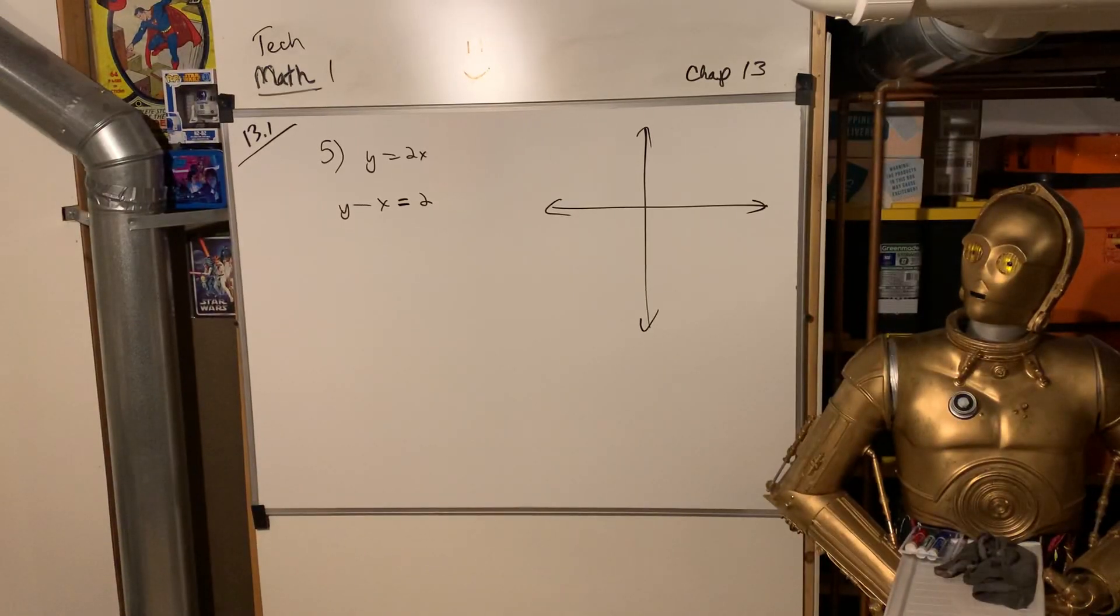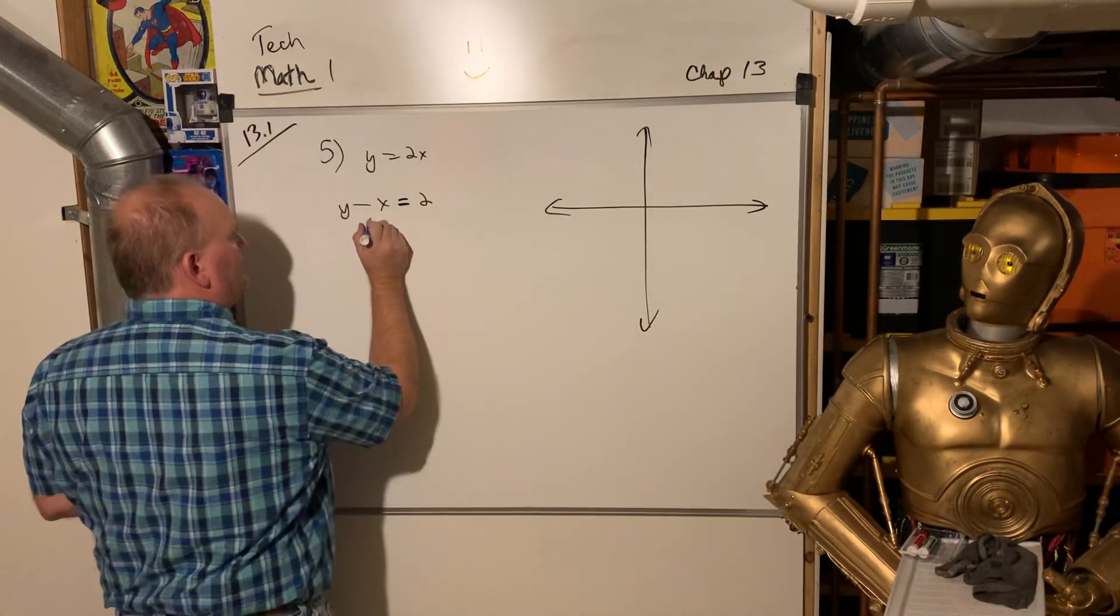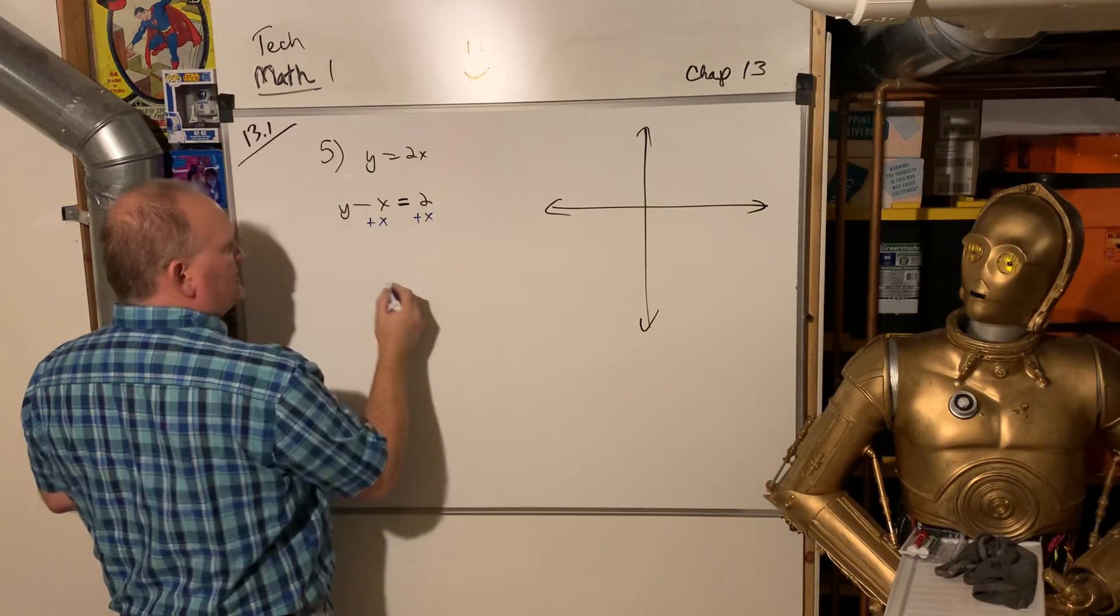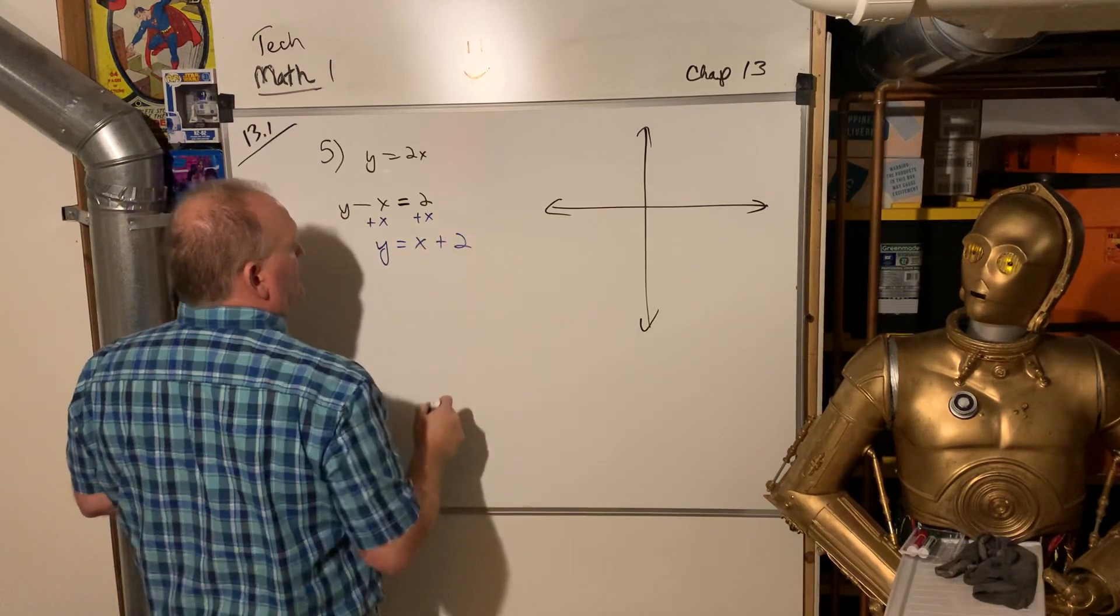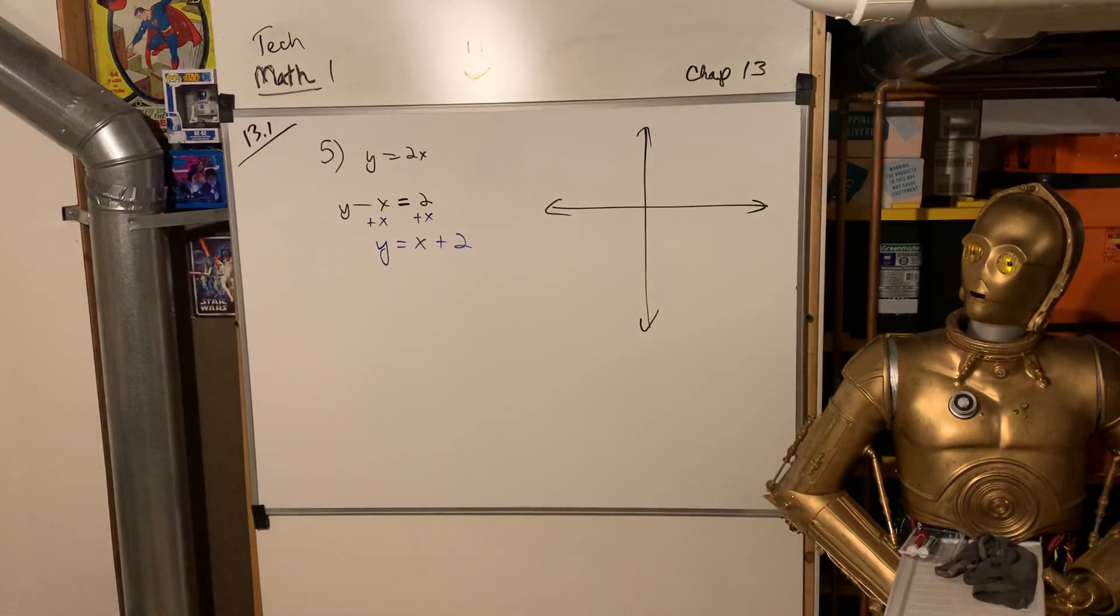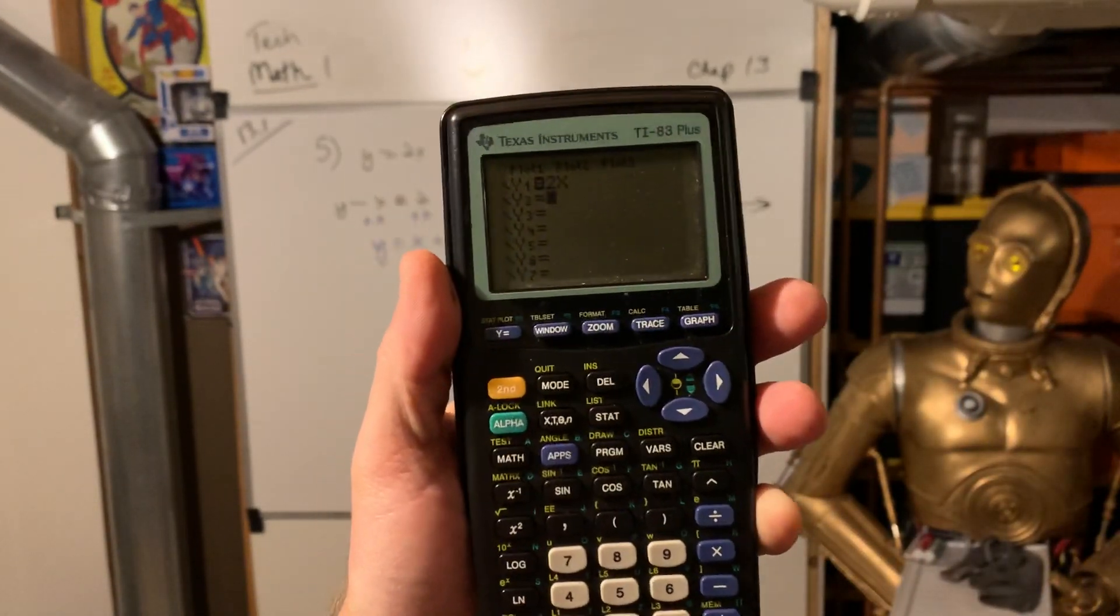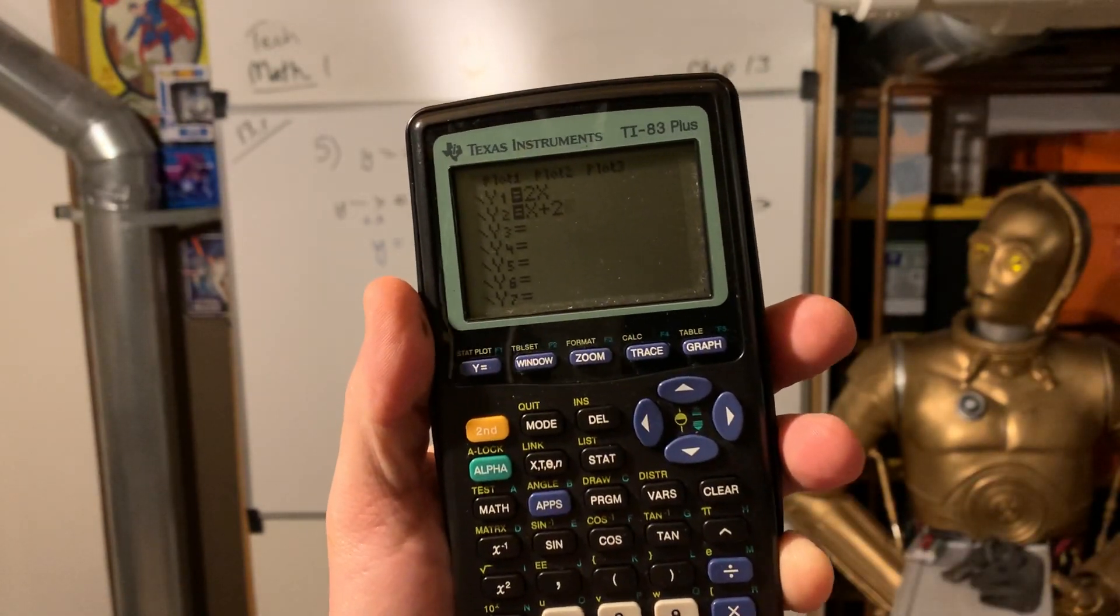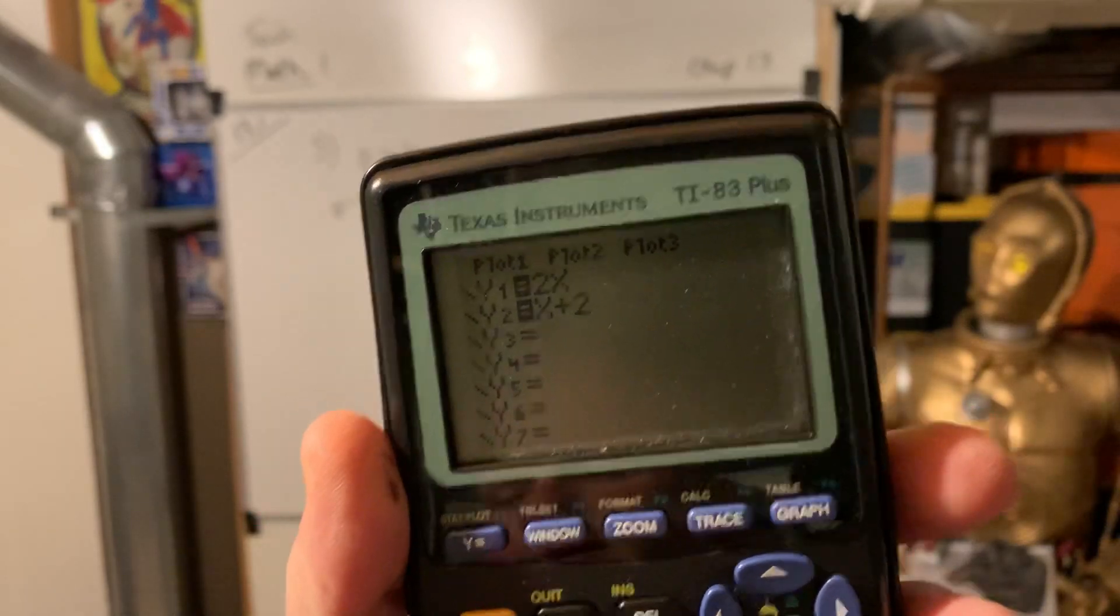Now, before we find y sub 2, look at what they did. They don't have it solved out for y real nice, do they? So we add x to both sides, and now we got this: y is equal to x plus 2. Okay, so let's put that in. We're back here on our calculator, y is equal to x plus 2. And then we're going to hit enter, and now it bops down to y sub 3.